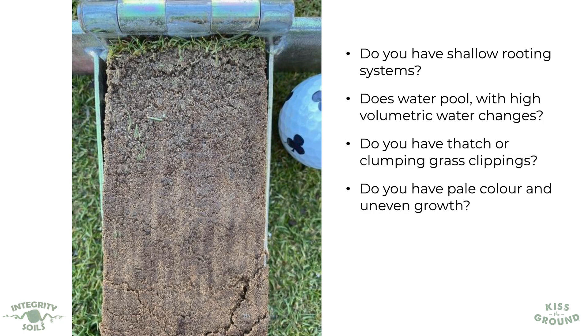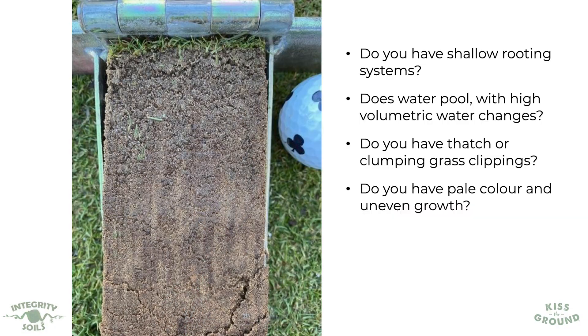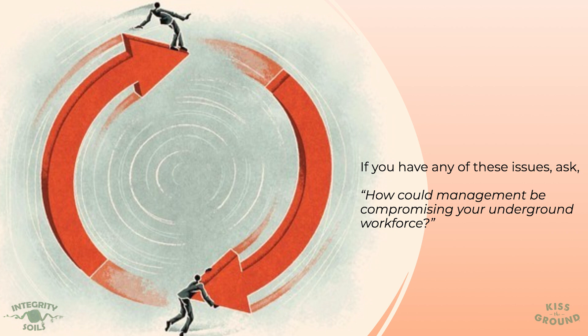What is happening with your water cycle? Are we storing the water that we can store? Are you increasing your water use efficiencies? Do we have those clumping grass clippings? Are we seeing nutrient density in the grasses we're growing so that these grasses are more able to withstand stress and are breaking down very quickly? Take a look at the growth across your fields — do you see an evenness of color, or do you see the plants growing very pale and uneven? If you have any of these issues, consider how your management is undermining or compromising your underground microbiology, because they are literally your free workforce in this space.